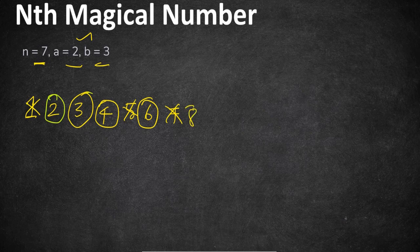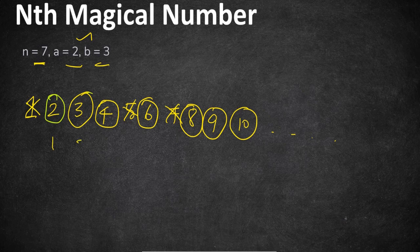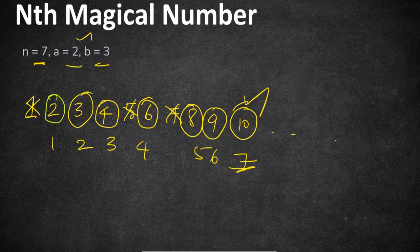Next, 6 can be divisible by both 2 and 3. 7 cannot be divisible by either. 8 can be divisible by 2, 9 can be divisible by 3, 10 can be divisible by 2, and so on. Counting these magical numbers: 1st is 2, 2nd is 3, 3rd is 4, 4th is 6, 5th is 8, 6th is 9, 7th is 10. So 10 is the seventh magical number and we have to return this as our output.